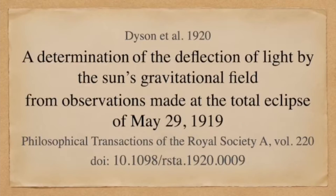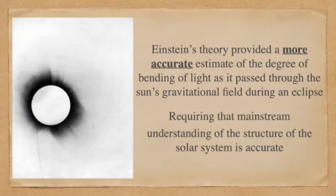In an earlier paper, Einstein had calculated the degree of curvature expected of light rays passing near to the Sun under both general relativity and Newtonian theory. The difference between the two theories' predictions was large enough to be observationally detectable. Two expeditions were dispatched to simultaneously observe the 1919 total eclipse of the Sun, and the curvature of light observed was clearly in accord with Einsteinian general relativity, not Newtonian theory — demonstrating that close to the Sun, where the gravitational field is much stronger, general relativity is observably more accurate.